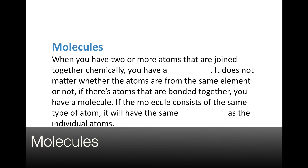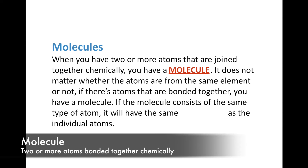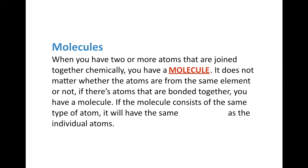The next type are molecules. When you have two or more atoms that are joined together chemically, you have a molecule. That's all a molecule is — two or more atoms bonded together chemically. It doesn't matter whether the atoms are the same type or not. If there are atoms bonded together, you have a molecule. If the molecule consists of the same type of atom, it will have the same properties of the individual atoms — if you have one carbon atom floating around by itself, it's going to have the same chemical and physical properties as two or four carbon atoms bonded together, because it's all carbon.